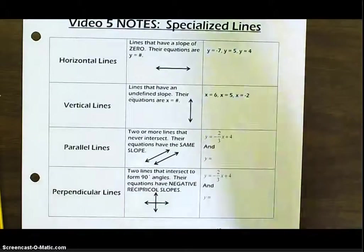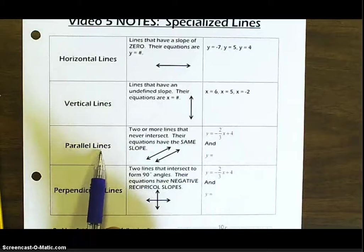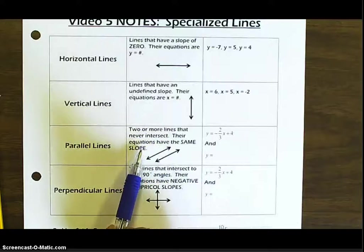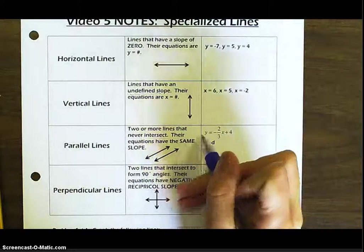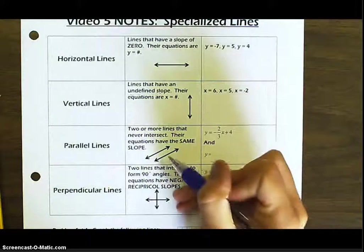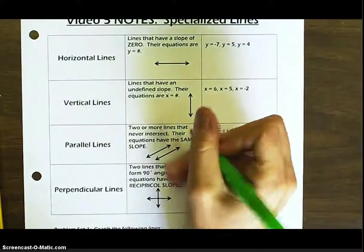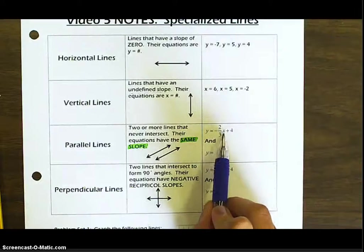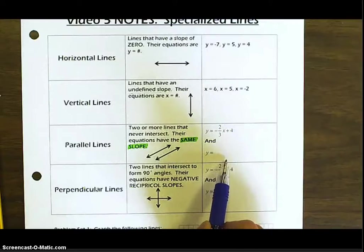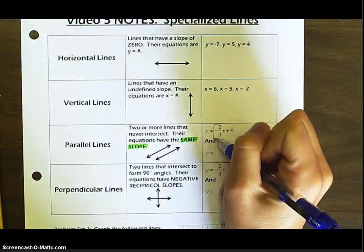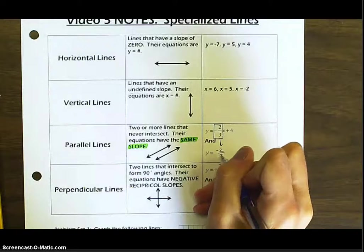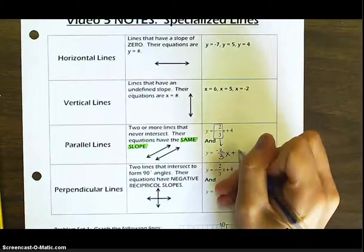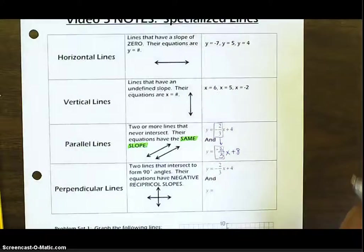Now that we've reviewed those, let's take a look at parallel and perpendicular lines. Parallel lines are two or more lines that never intersect. Their equations have the same slope. If these lines were to go on forever, they would never intersect because they're going in the same direction. So, if I give you the line y equals negative two-thirds x plus four, a parallel line would have the same slope — negative two-thirds x — but a different intercept, like plus eight. These are parallel lines because they have the same slope.